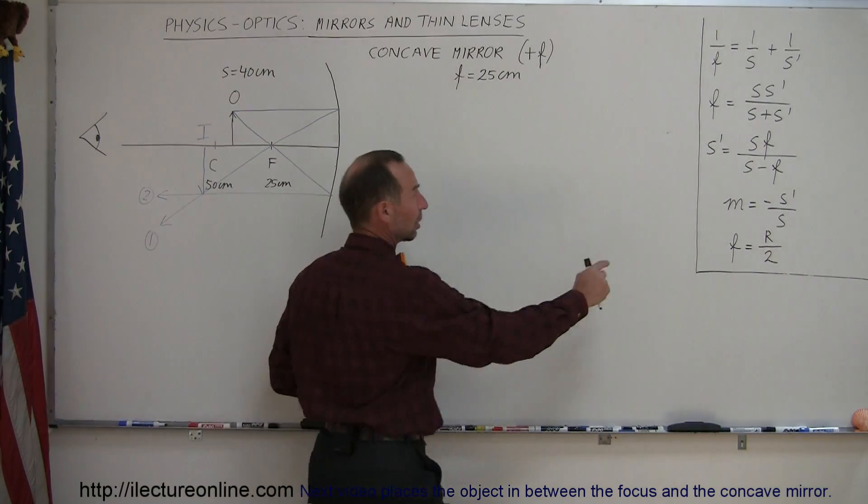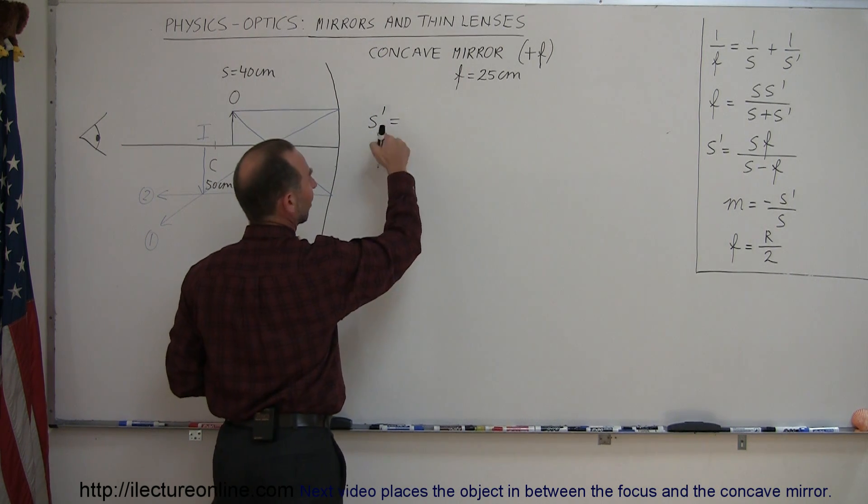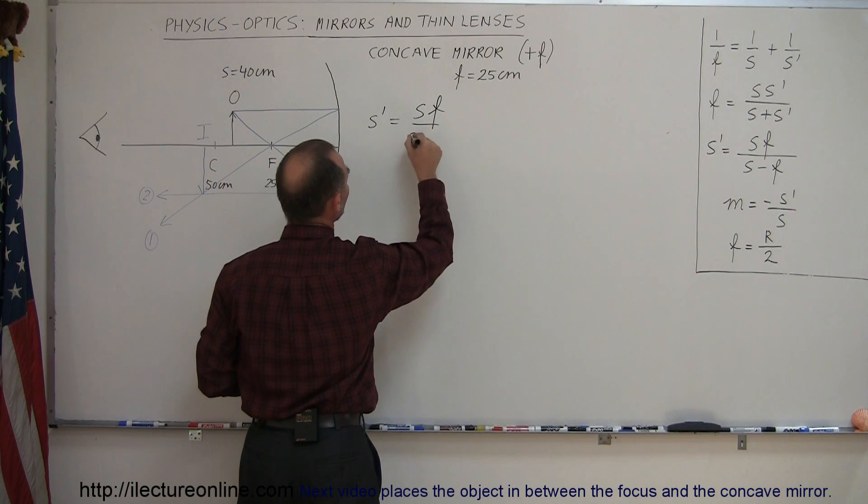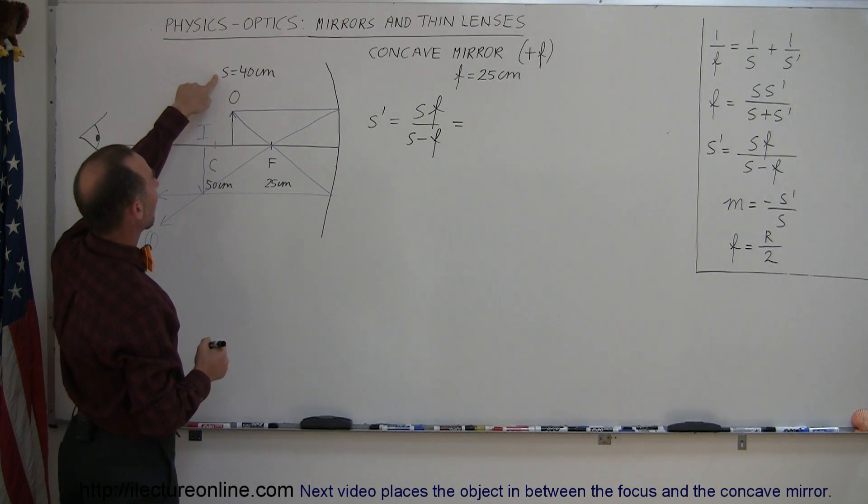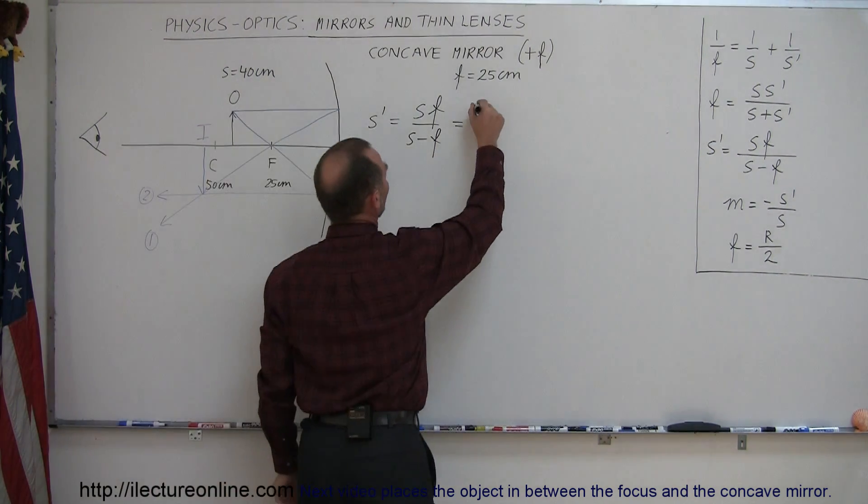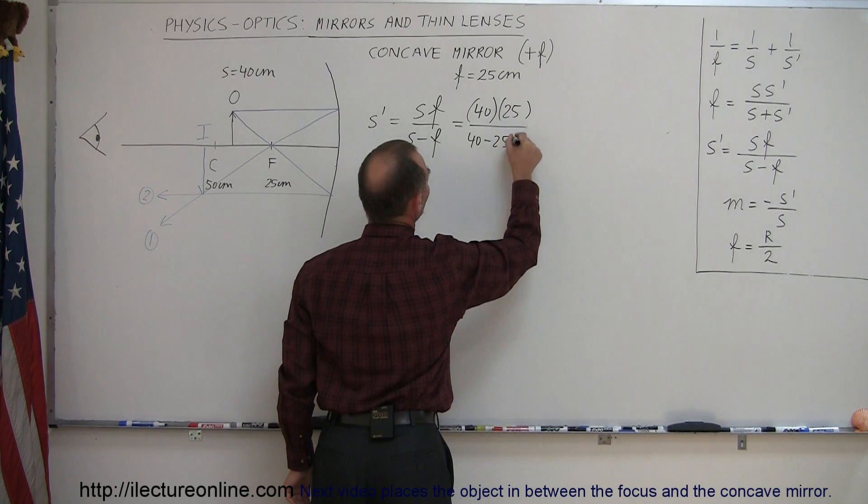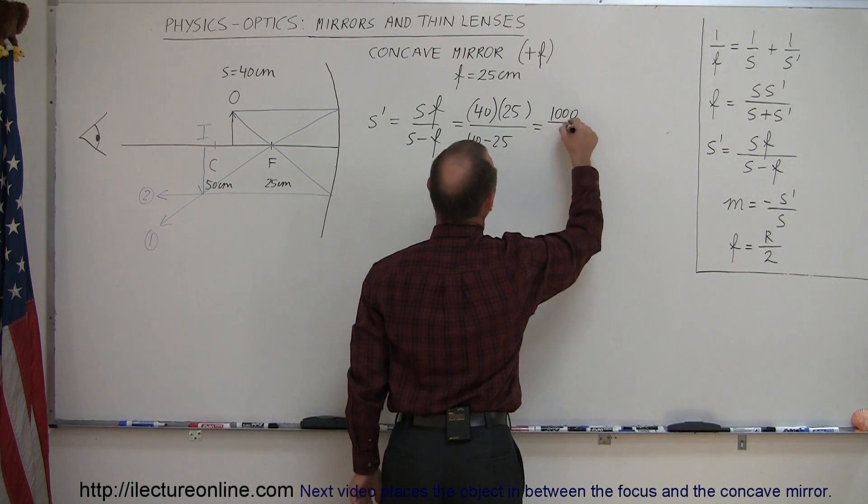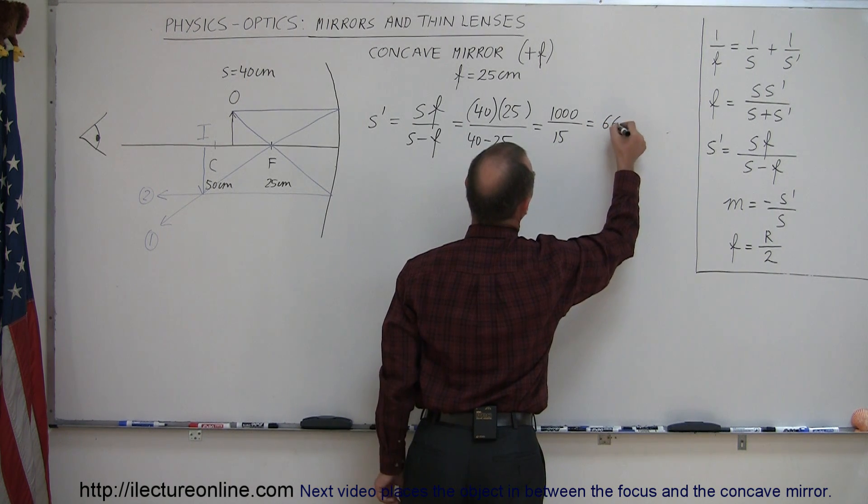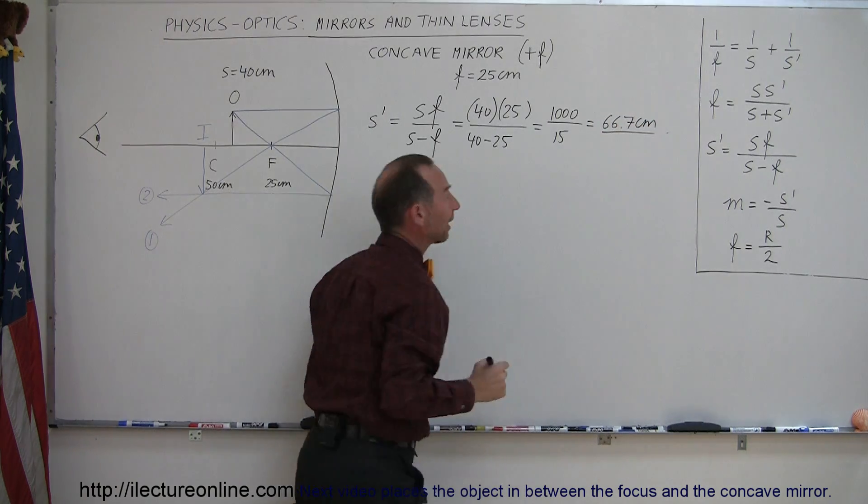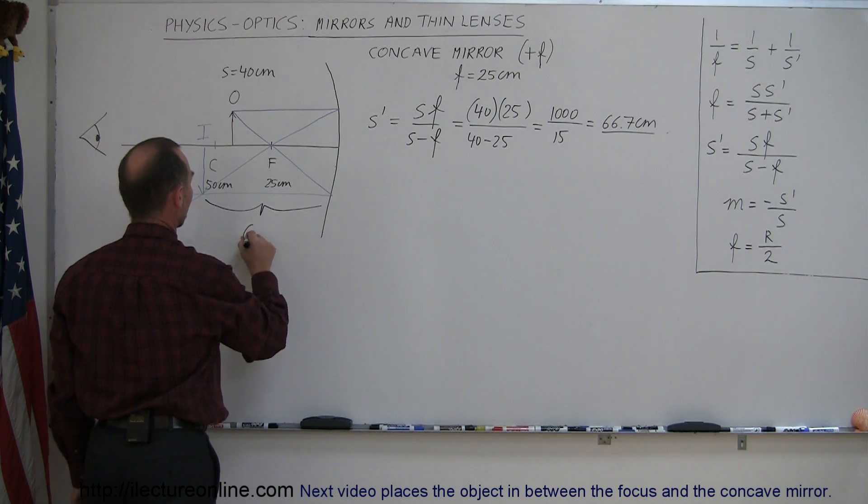So again, using our equation here to find the image distance s prime, which is the image distance. S is the object distance, so s prime equals s f divided by s minus f. F of course is the focal length. So this is equal to—oh right here I gave you the object distance, 40 centimeters away from the mirror. So this is 40 times 25 divided by 40 minus 25, so this is equal to 1000 divided by 15, which would be equal to 66.7 centimeters. All right, that's the distance to the image, so right here from there to there is then 66.7 centimeters.